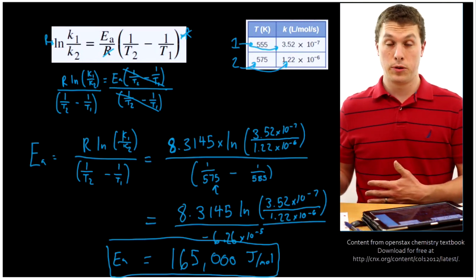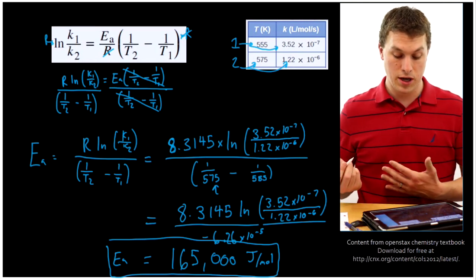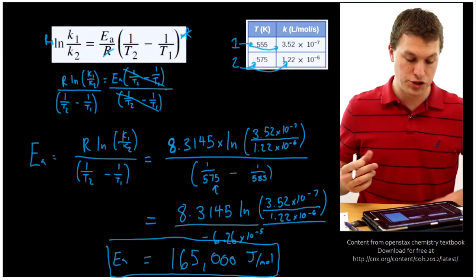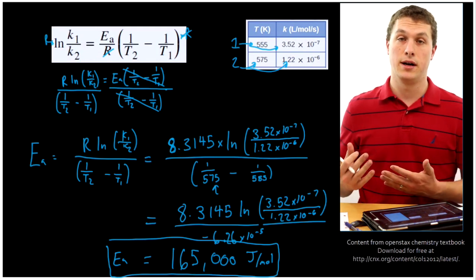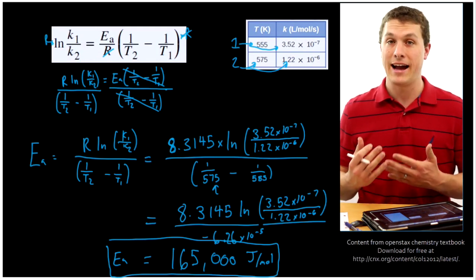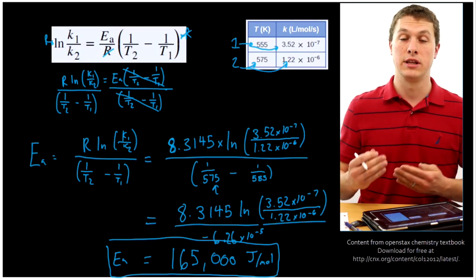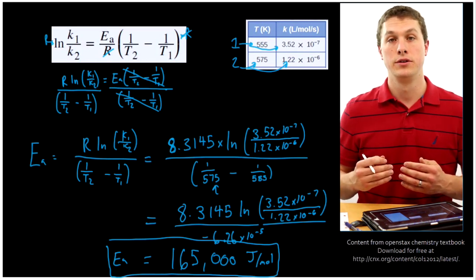Now, you could convert that into kilojoules per mole, right, which would just be divided by 1,000. It would be 165 kilojoules per mole. But that's our activation energy. So whenever you're given two temperatures and two rate constants, you can go through this process to solve for the activation energy of the reaction, which is basically how hard it is to run that reaction, what hill we have to get over to run the reaction.